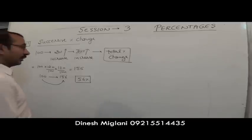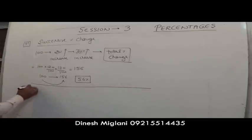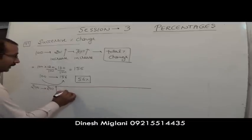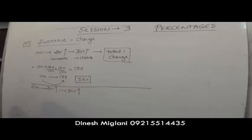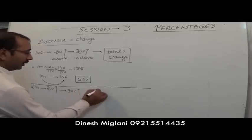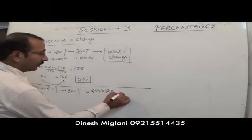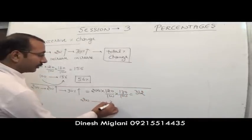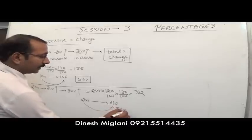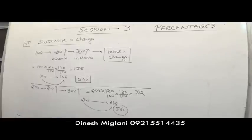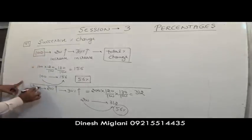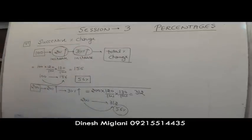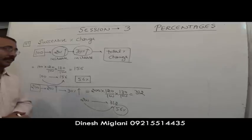If instead of 100 the number were 200, the percentage change would still be 56%. This tells us that the actual value does not matter — if the percentage increases or decreases are the same, the overall percentage change is the same. So we have a standard shortcut formula.